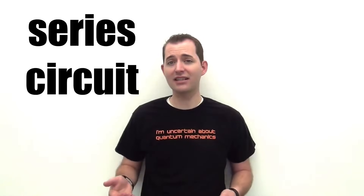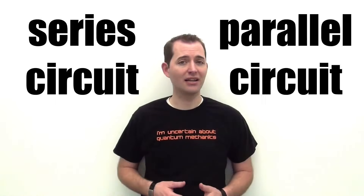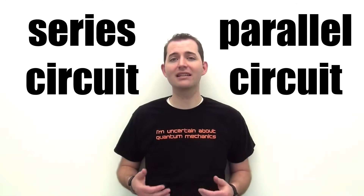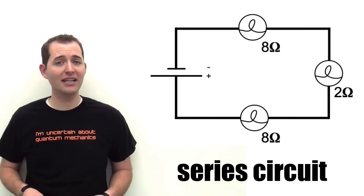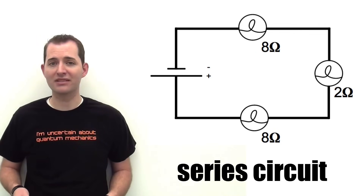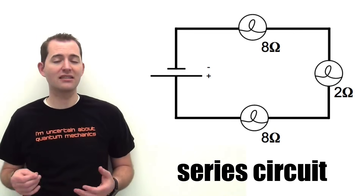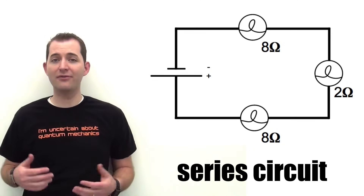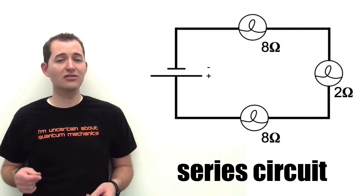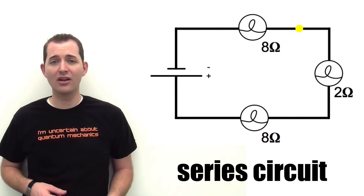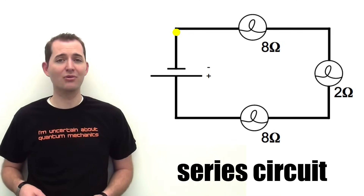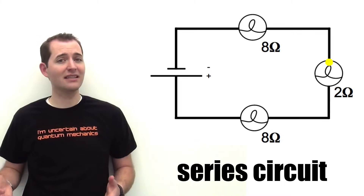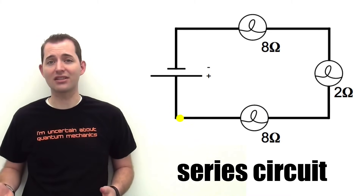We'll be looking at some key differences between a circuit in series and a circuit in parallel. Let's start with an example of a circuit in series. In this example we have a battery connected to three light bulbs, each connected end to end. If we imagine a single charge passing through this circuit, we can see that it would pass through every single part or light bulb in this circuit. This is a characteristic of series circuits.